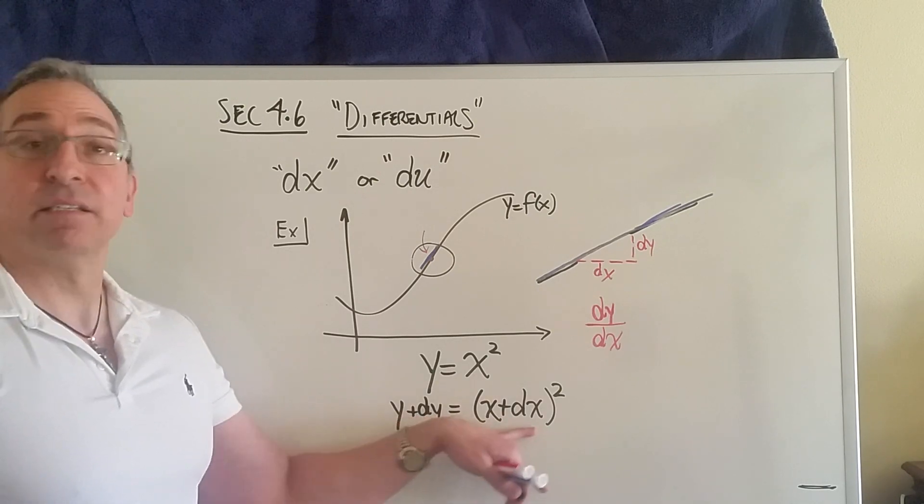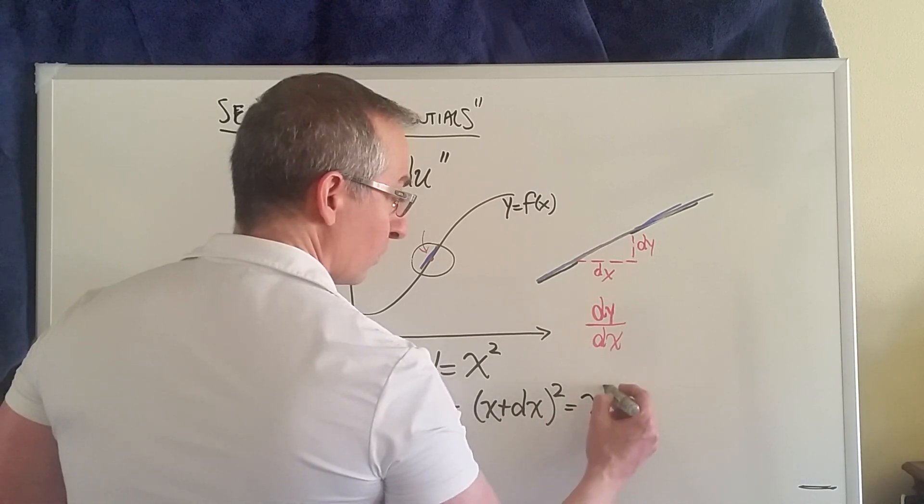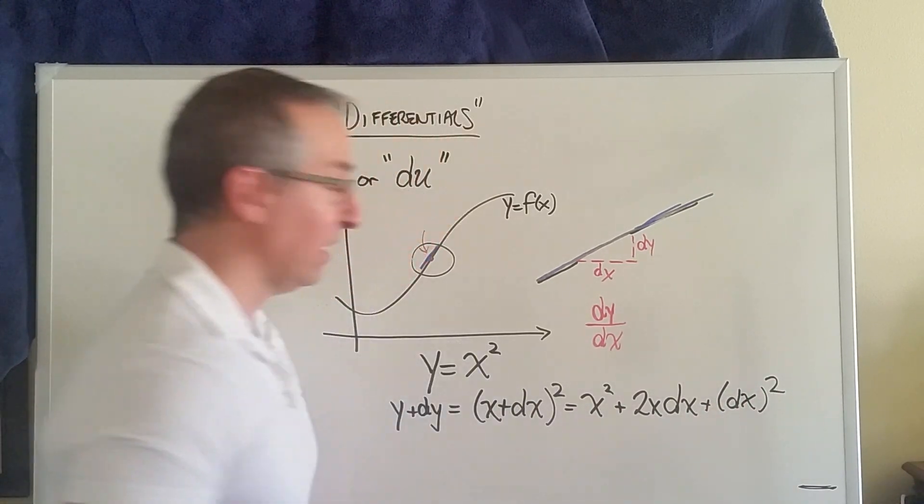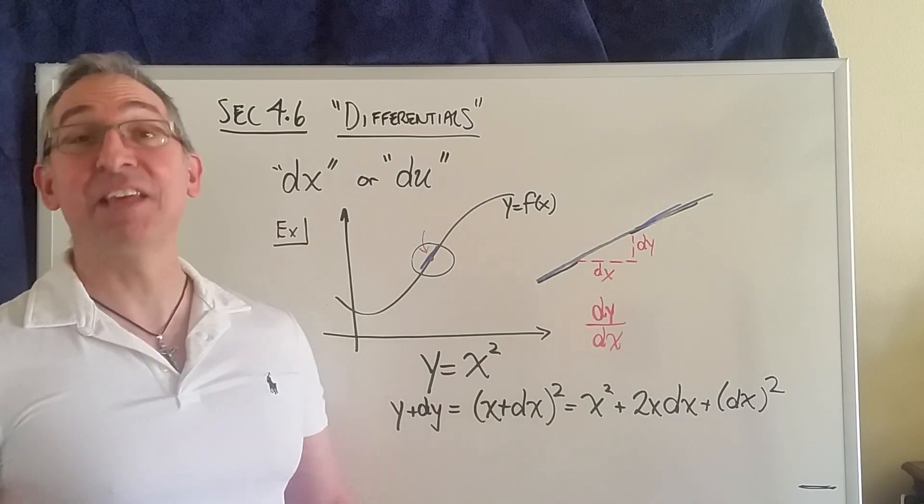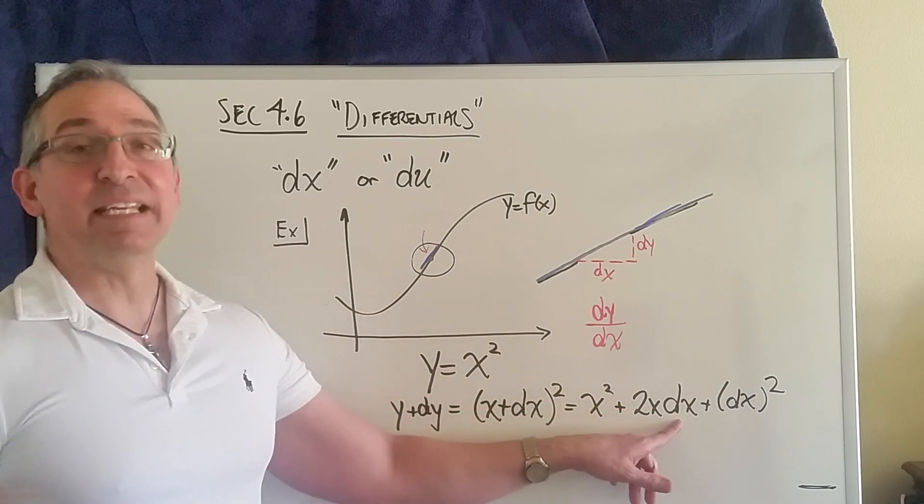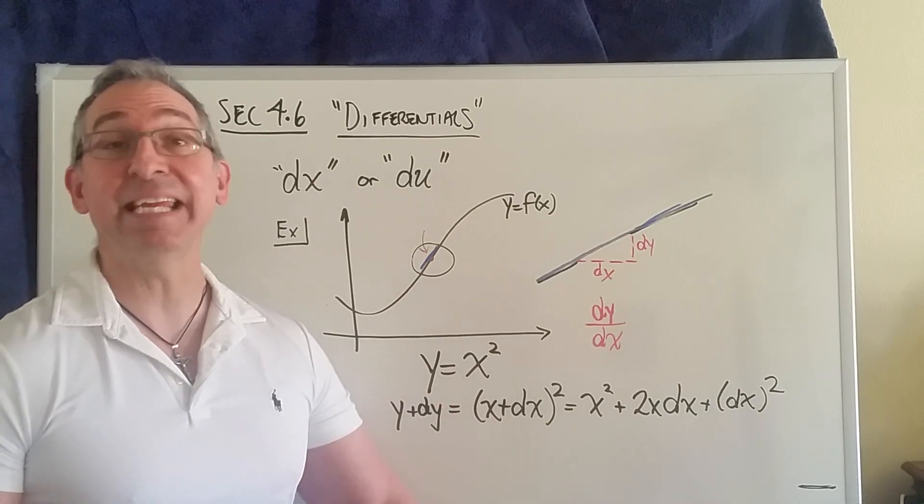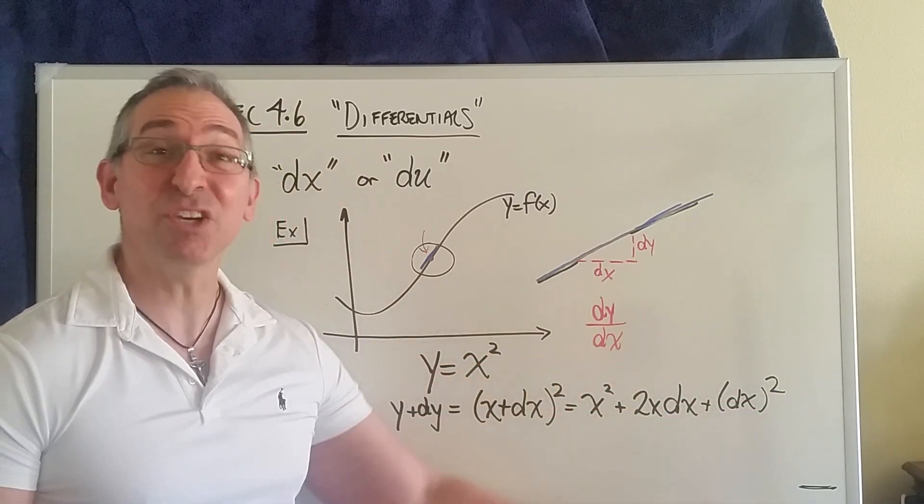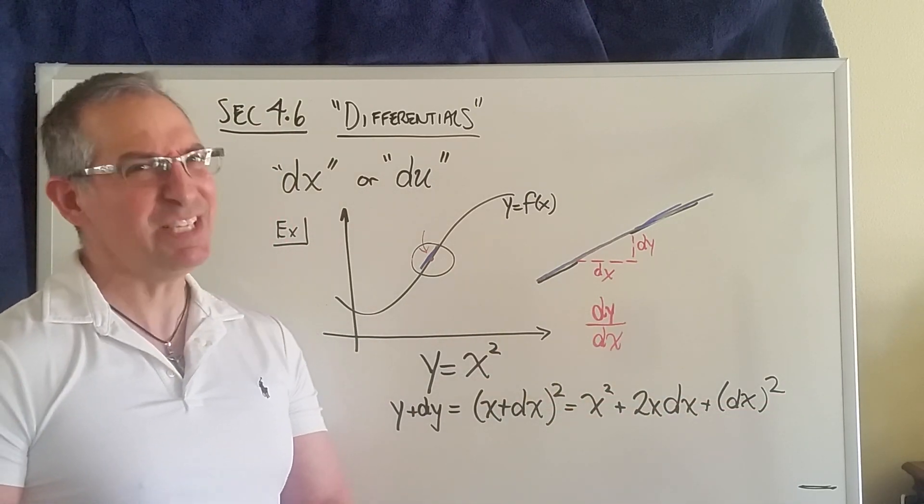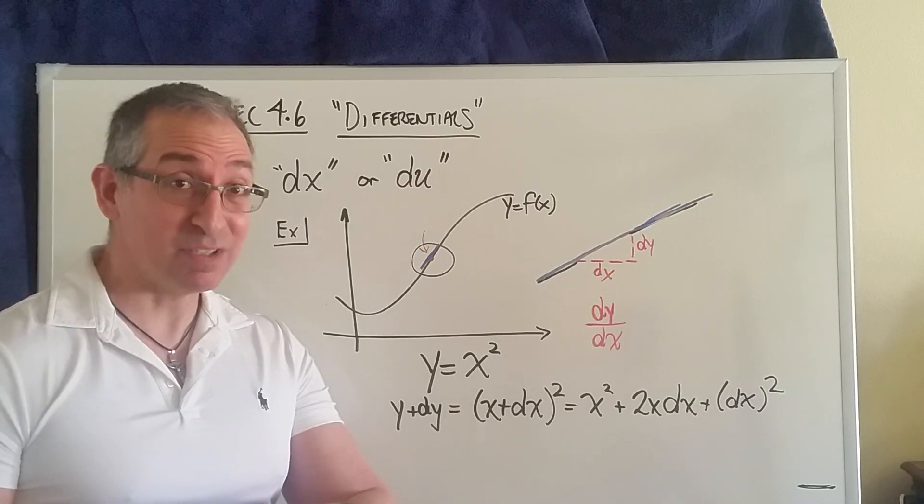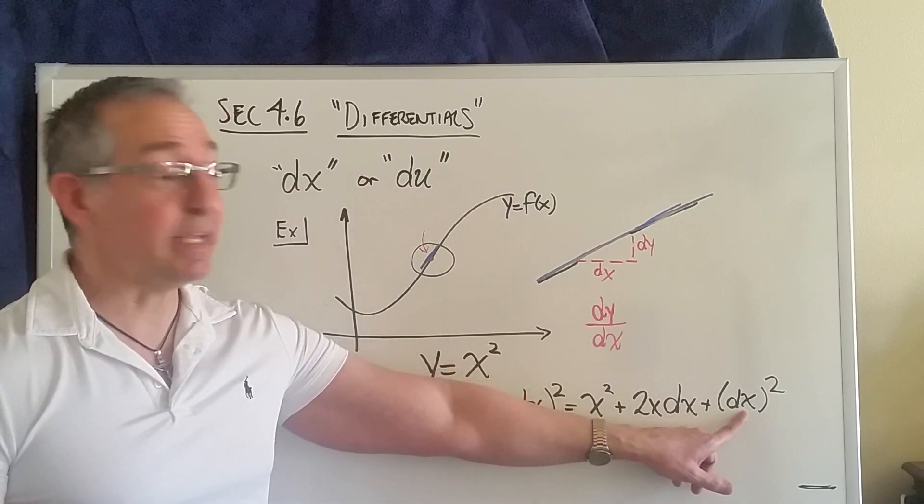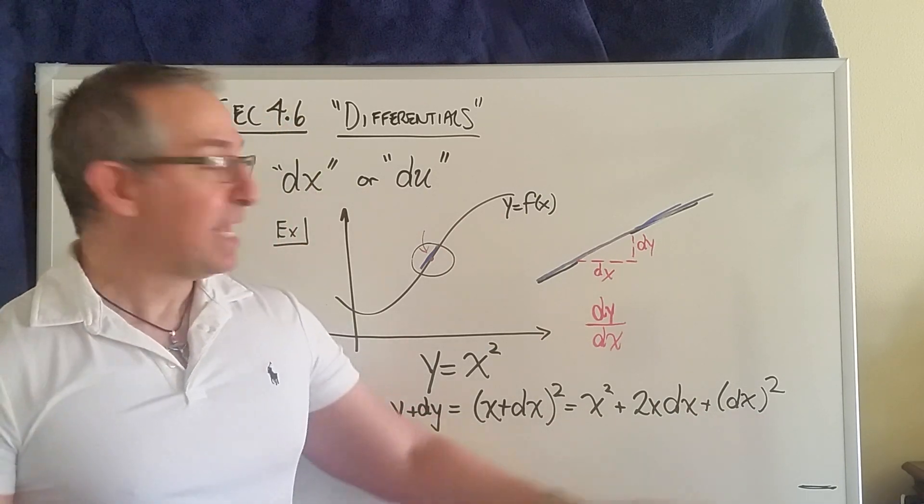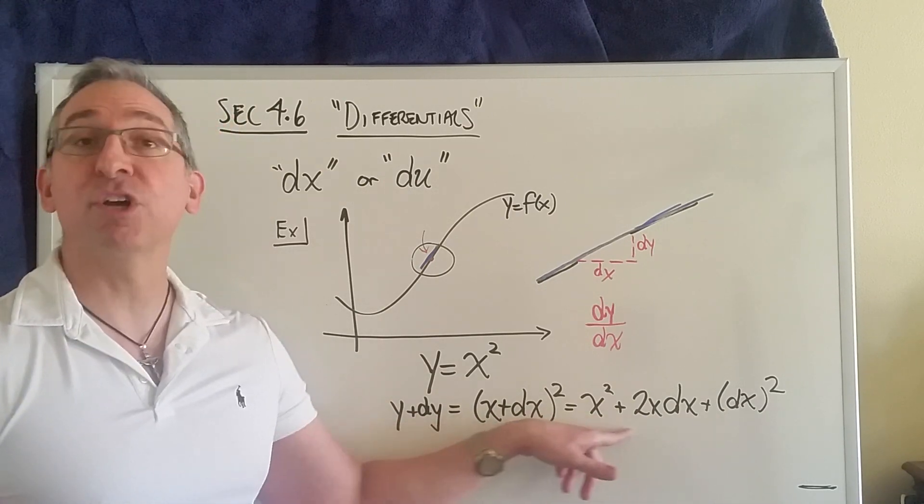So y plus dy equals, expanding this, x plus dx quantity squared equals x² plus 2x times dx plus dx². Now here's how the thinking goes. dx is an extremely small amount—that's how we defined differential. But if you take that same level of smallness and you square it, it's going to get even smaller. Try with a number—you take one-half and square it, you get back one-fourth, which is smaller. Over here you've got a very tiny quantity raised to a power that's going to make it even tinier still. We can say this term right here is negligible. It adds no appreciable amount to the sum of these two terms, so maybe we just disregard it.